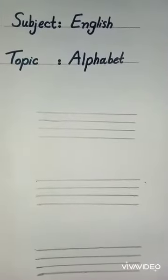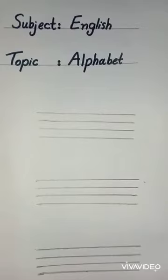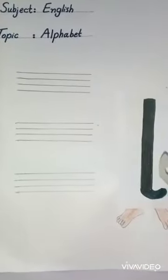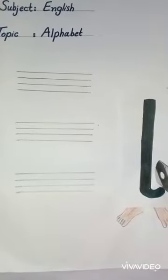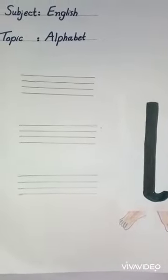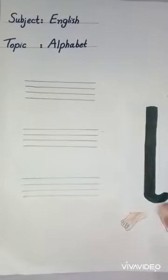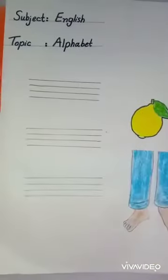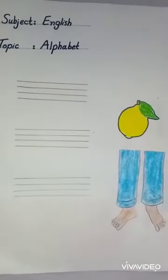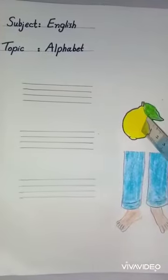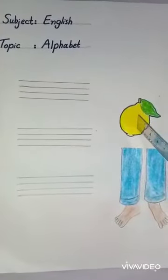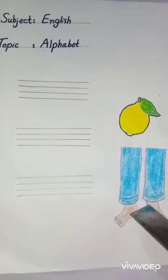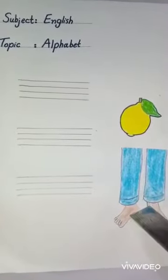Today we will discuss alphabet L. Dear students, this is alphabet L. Now look here — this is lemon, and these are legs. The names of lemon and legs start from alphabet L.